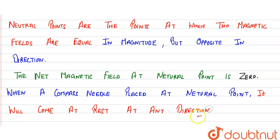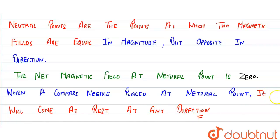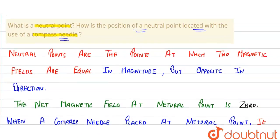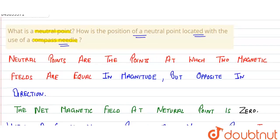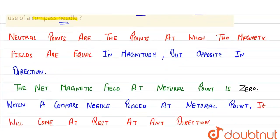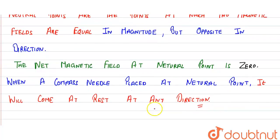So, with the help of a compass needle, when a compass needle is placed at a neutral point, it will come to rest at any direction. By this method, we can find the neutral point by using a compass needle. Thank you.